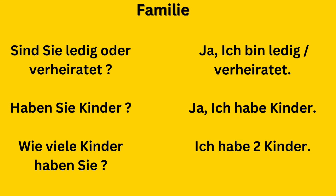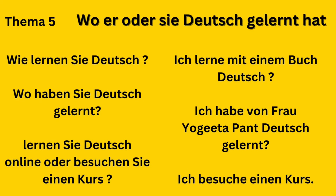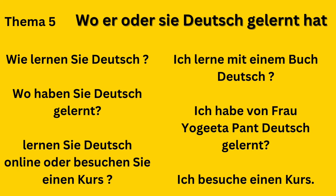You can also ask about marital status: Sind Sie ledig oder verheiratet? Answer: Ich bin ledig (I am single), or Ich bin verheiratet (I am married). Or you can ask: Haben Sie Kinder? Answer: Ja, ich habe Kinder. Then follow up: Wie viele Kinder haben Sie? Answer: Ich habe zwei Kinder. So you have many options for the family theme.